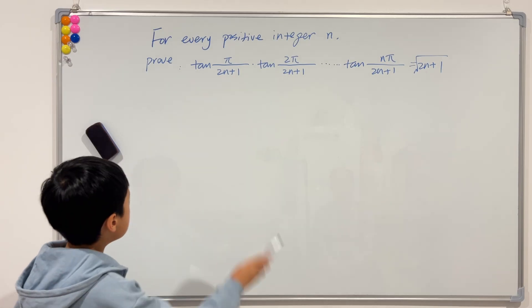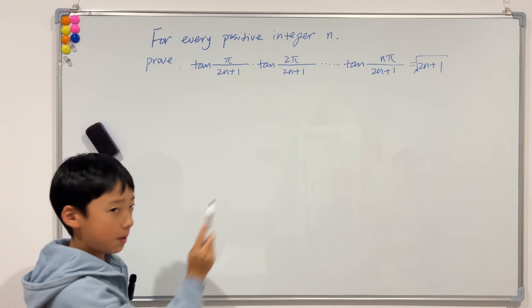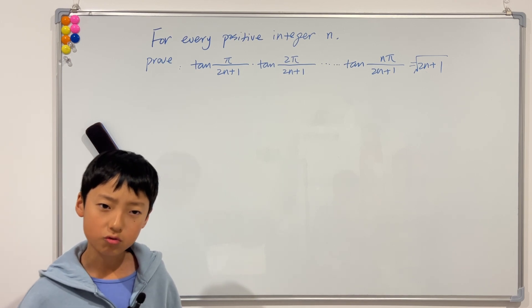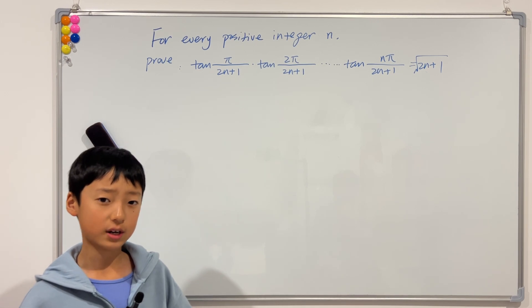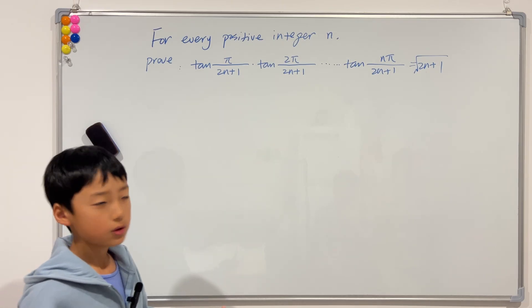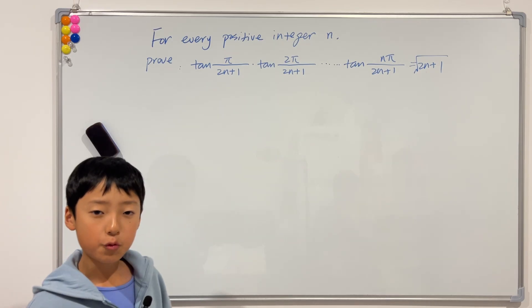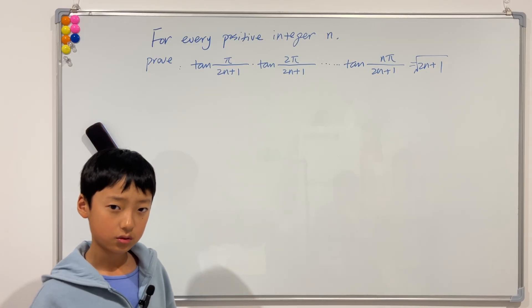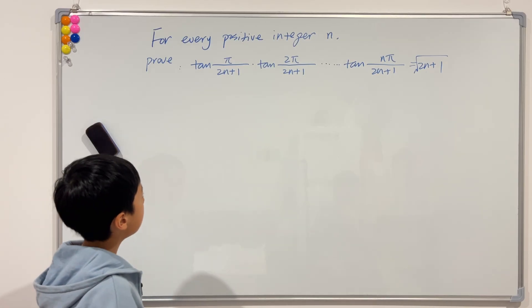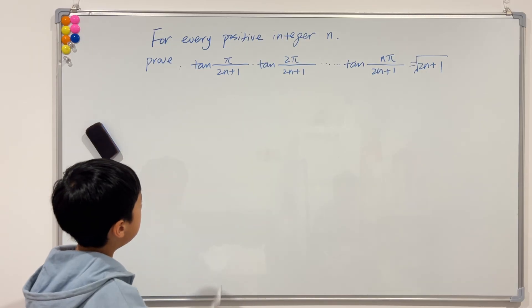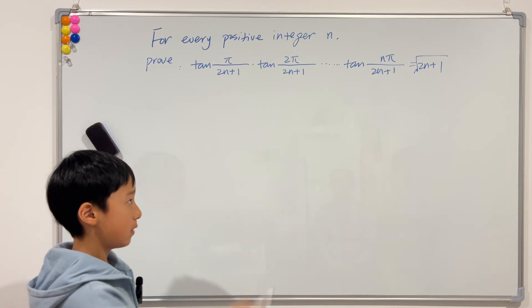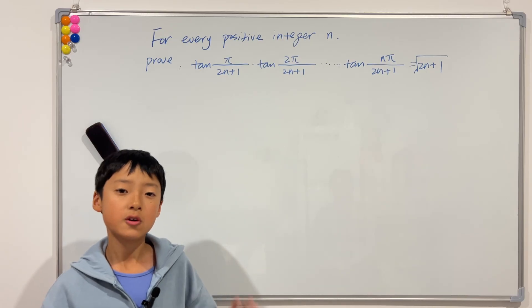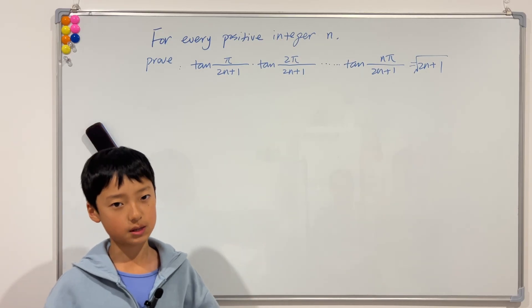When we see something times something equals something, what does that remind you of? Well, polynomials — and in our case, a quadratic equation. For example, if n were equal to 3, we would think of a polynomial of degree 3. So if n is equal to 2, then the bottom is 5, and we have to prove it's equal to the square root of 5. And this proof is actually going to include complex numbers.